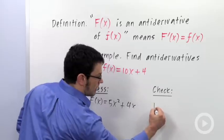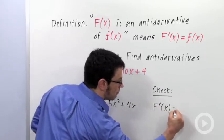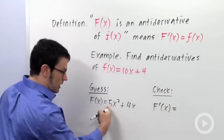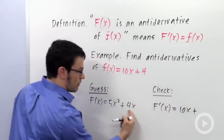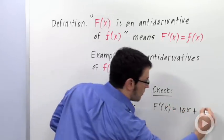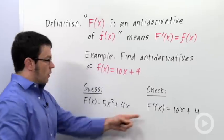Now, let me check that by differentiating. Capital F prime, this would be the two would come down in front. You get 10x. The derivative of 4x is 4. And there we go. That works.